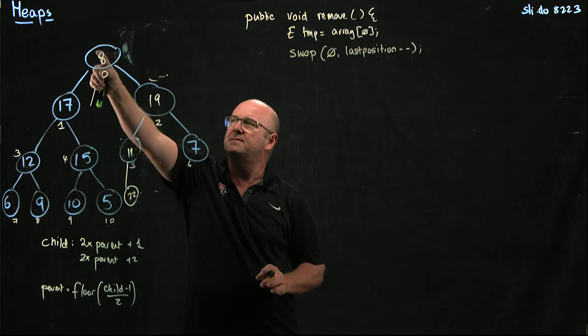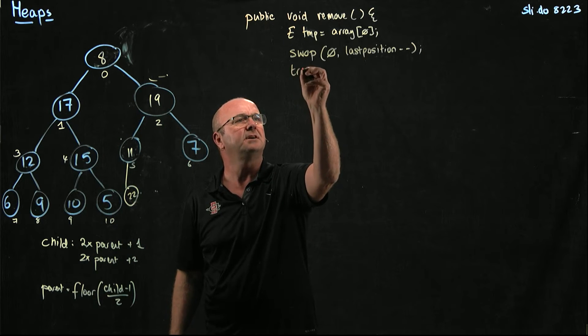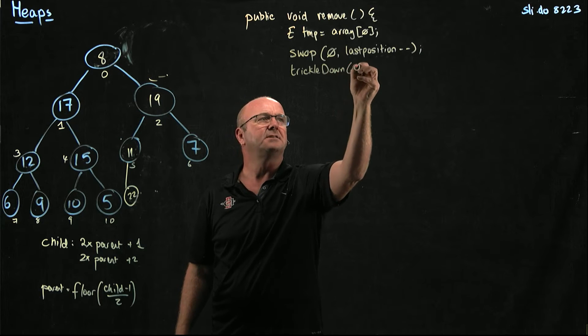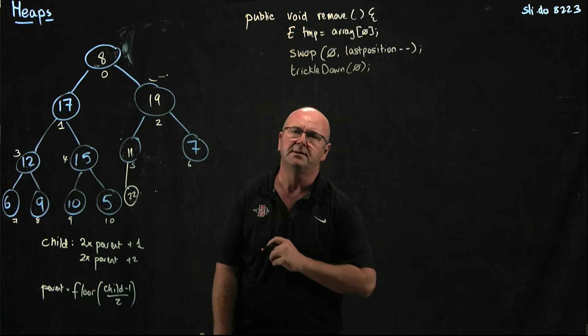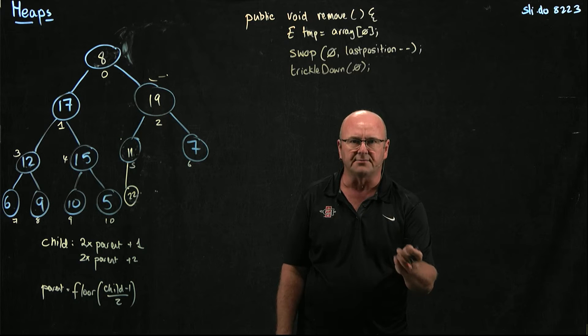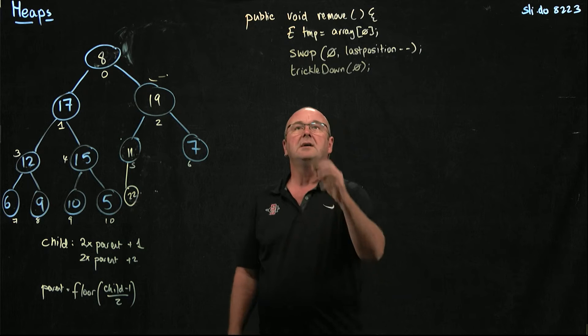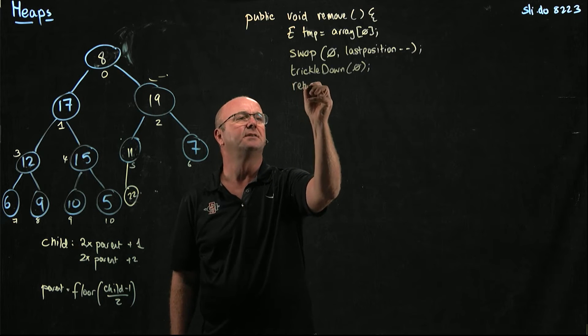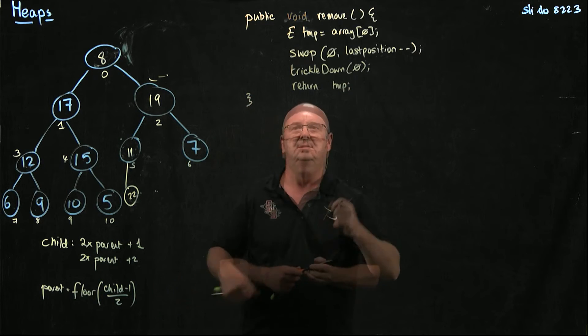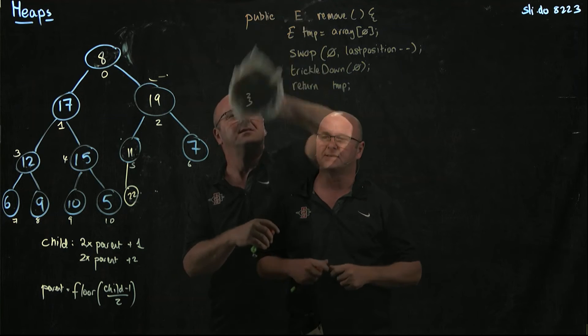So now I've swapped it, and now what I've got to do is I've got to trickle down, and I'm going to have a recursive trickle down method that's just going to take an integer that tells me where to start. And of course, initially, I start at the root position of position 0. And then finally, I just return tmp.